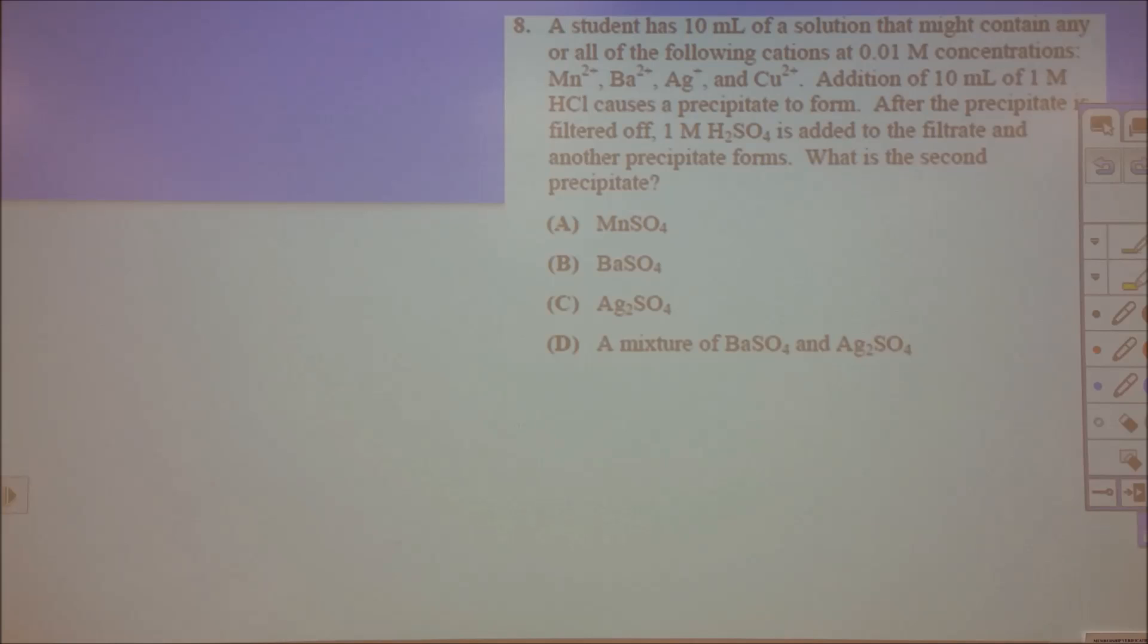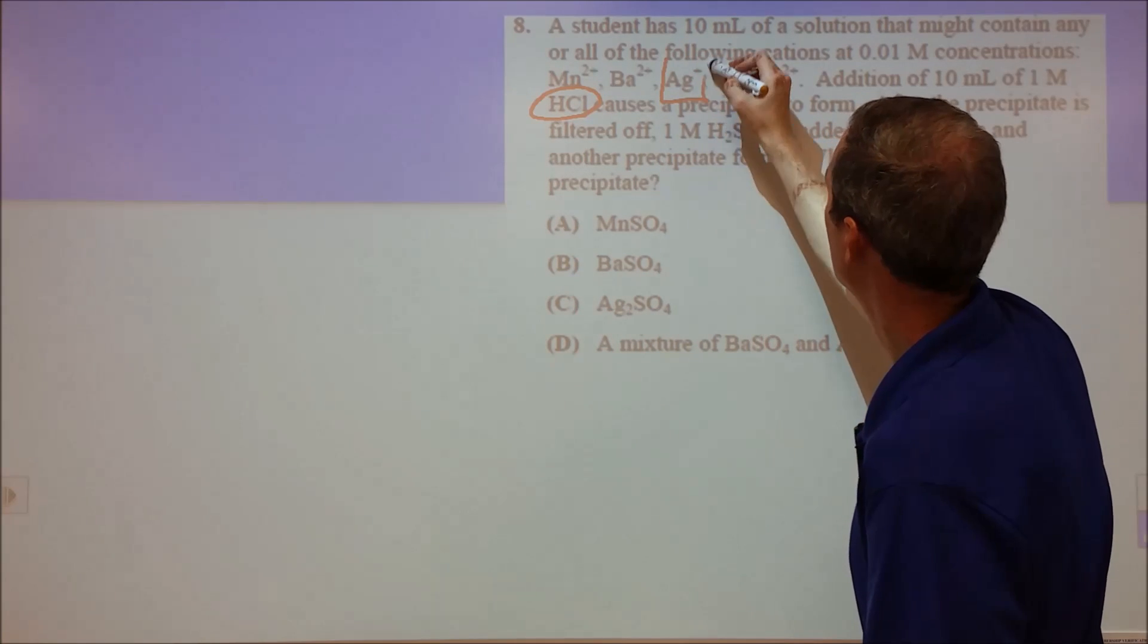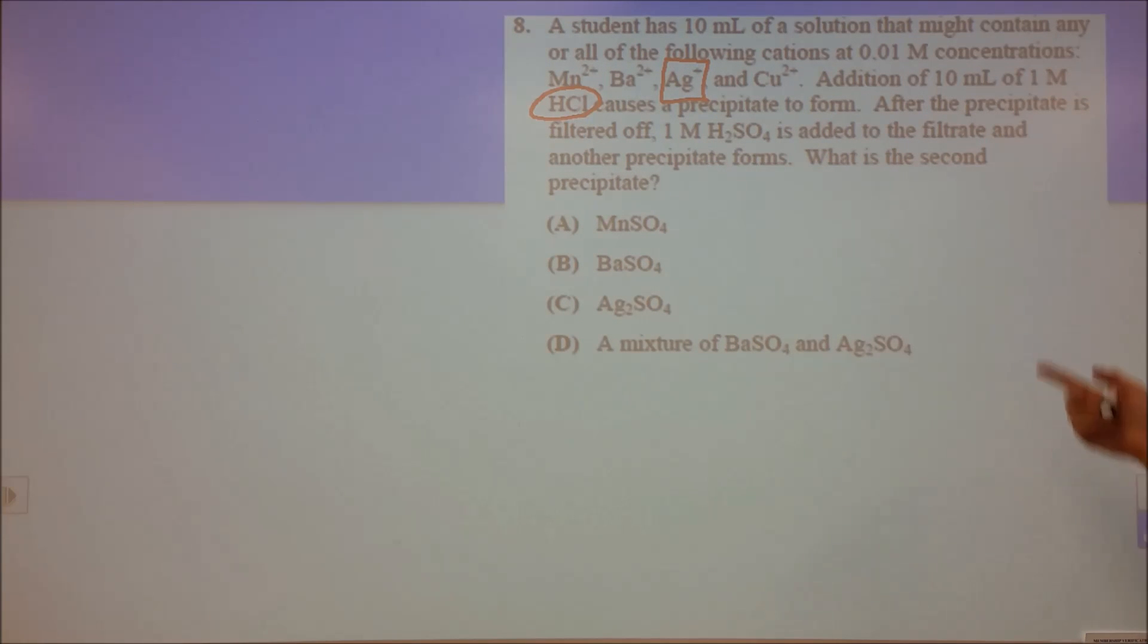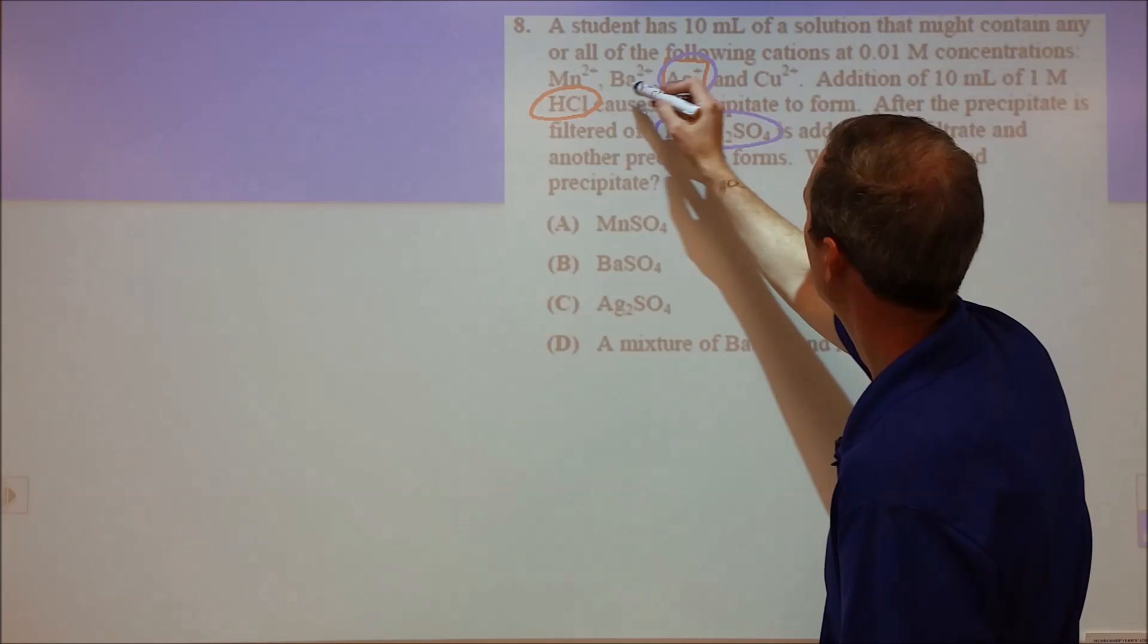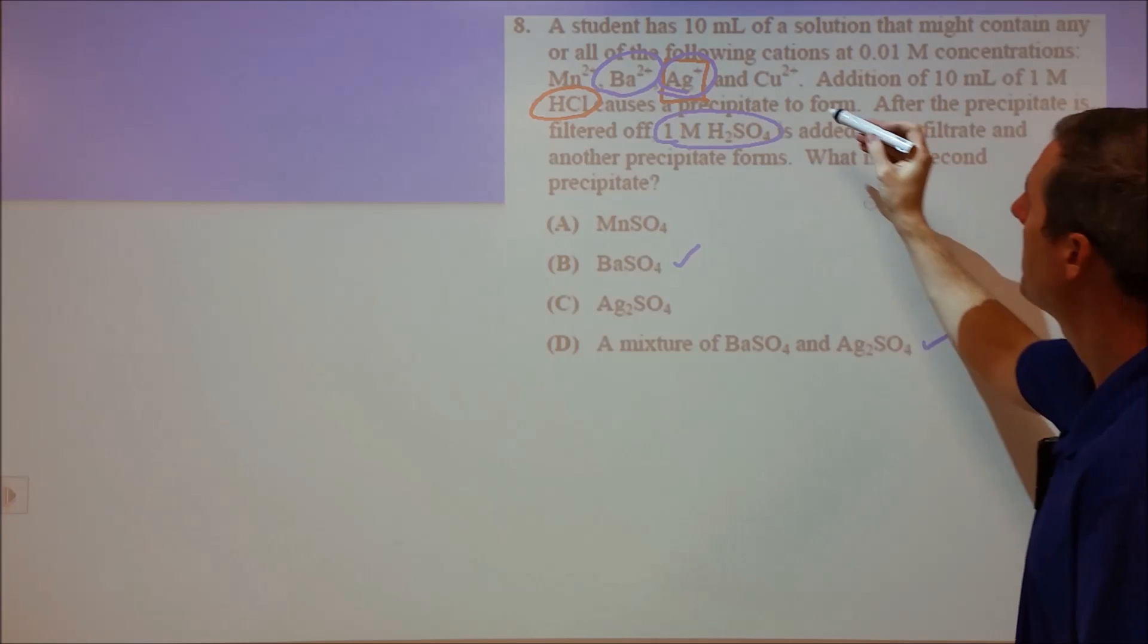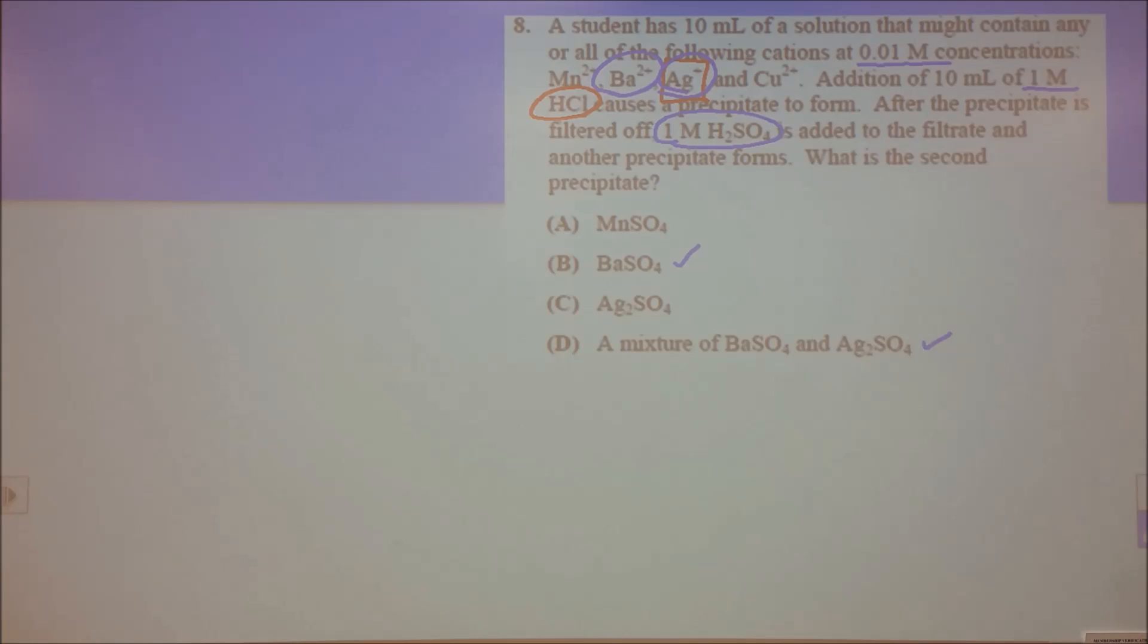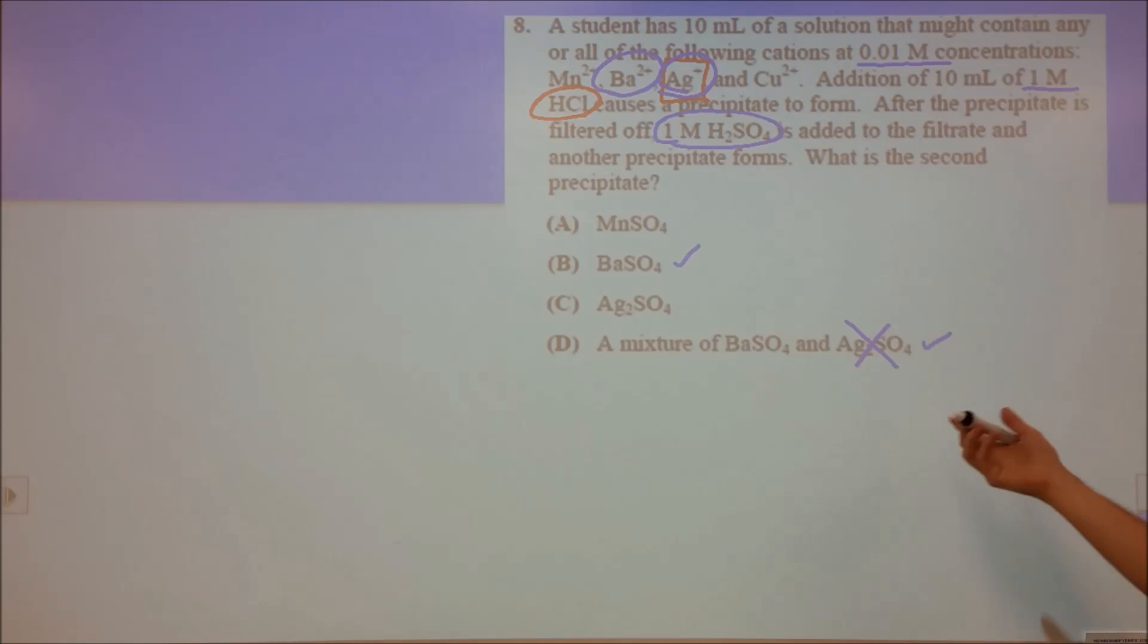Number eight is a qualitative analysis question. Of these four ions, you're adding HCl. HCl causes silver to precipitate. Manganese chloride, barium chloride, copper chloride are all soluble. Then they filter and add sulfuric acid. Sulfuric acid would precipitate with silver and also with barium. Which is the second precipitate? Either barium sulfate or a mixture of the two. We have 0.01 molar concentrations of the four ions and 1 molar HCl. We have a very large excess of chloride, which removes the silver from solution so we won't form precipitate of that. Answer is B, just the barium sulfate.